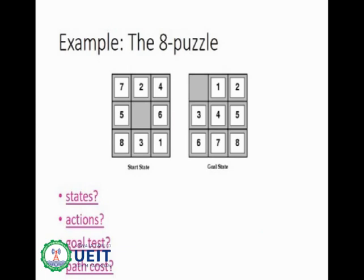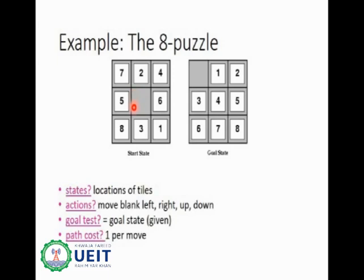Here is the eight puzzle problem. We have eight tiles and the ninth place is left blank for sliding movement; we must arrange all tiles in ascending order. The initial state is the given arrangement of tiles. The goal state is tiles arranged in ascending order as shown. Actions are to move the blank tile left, right, up, or down. The goal test is reaching that ideal arrangement. Path cost is one per move.